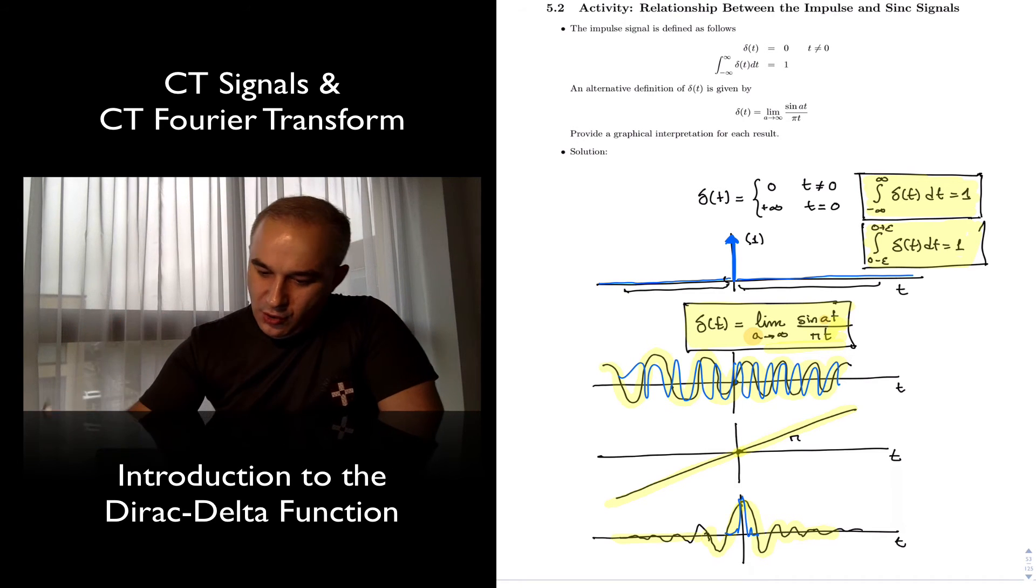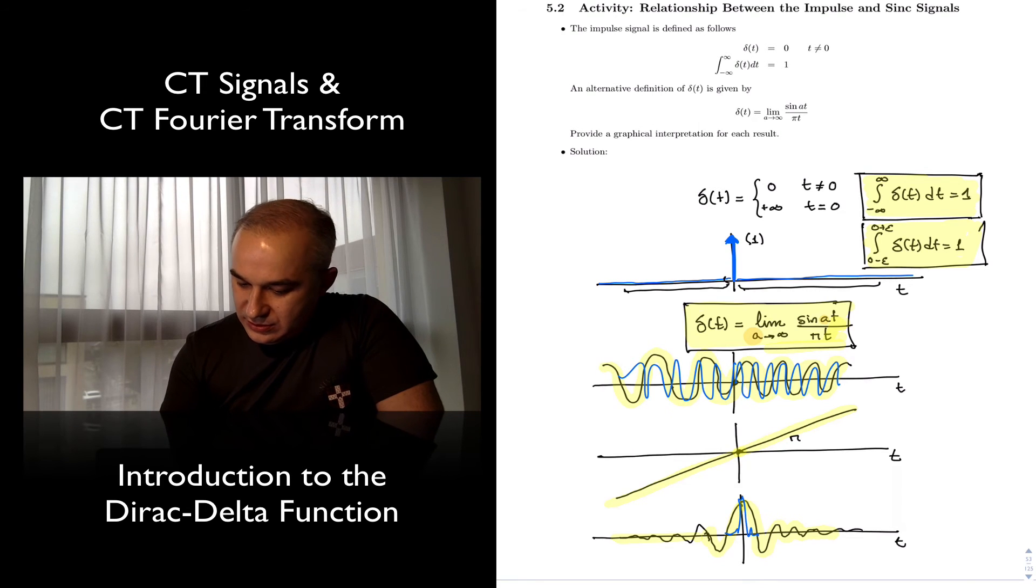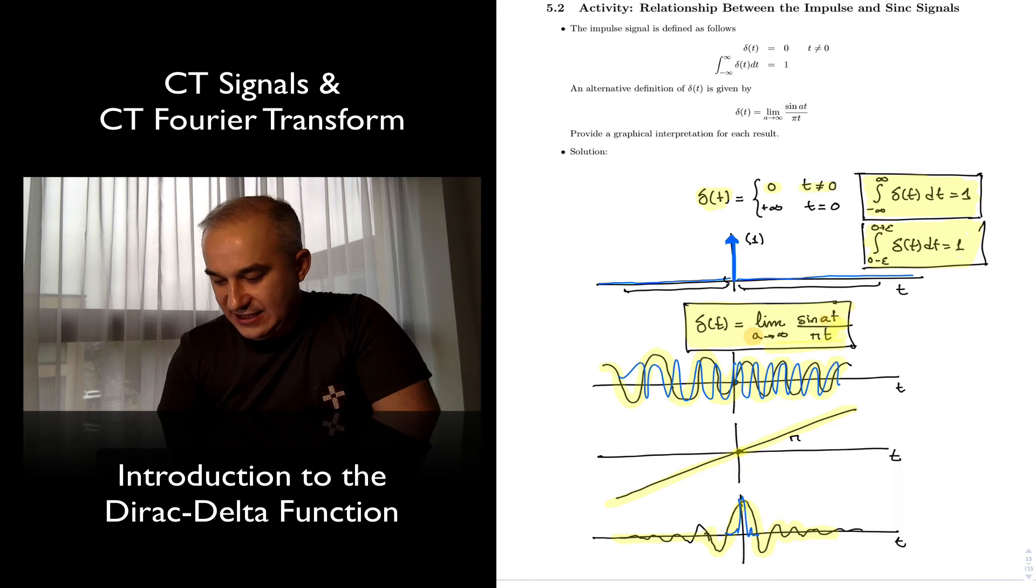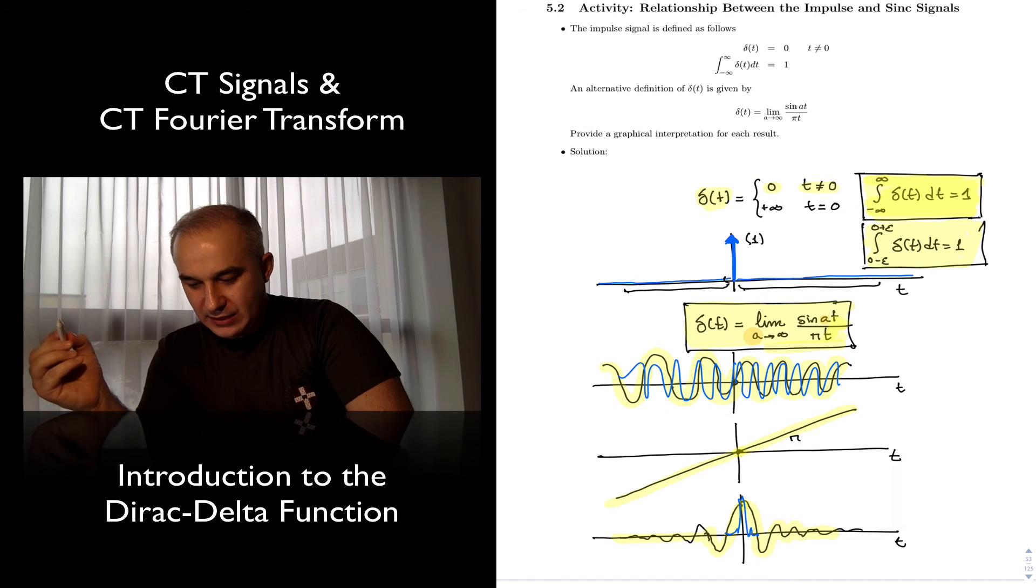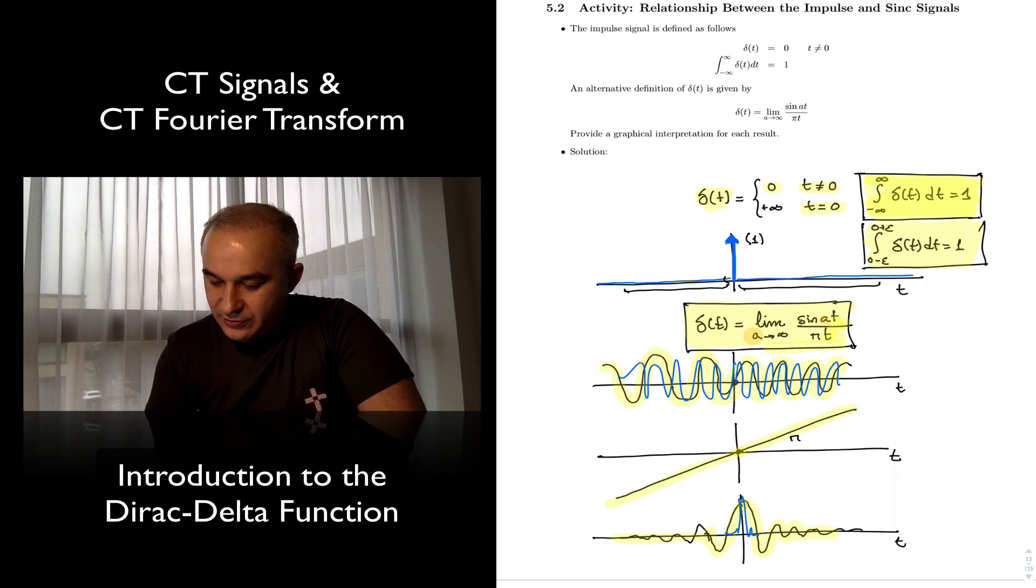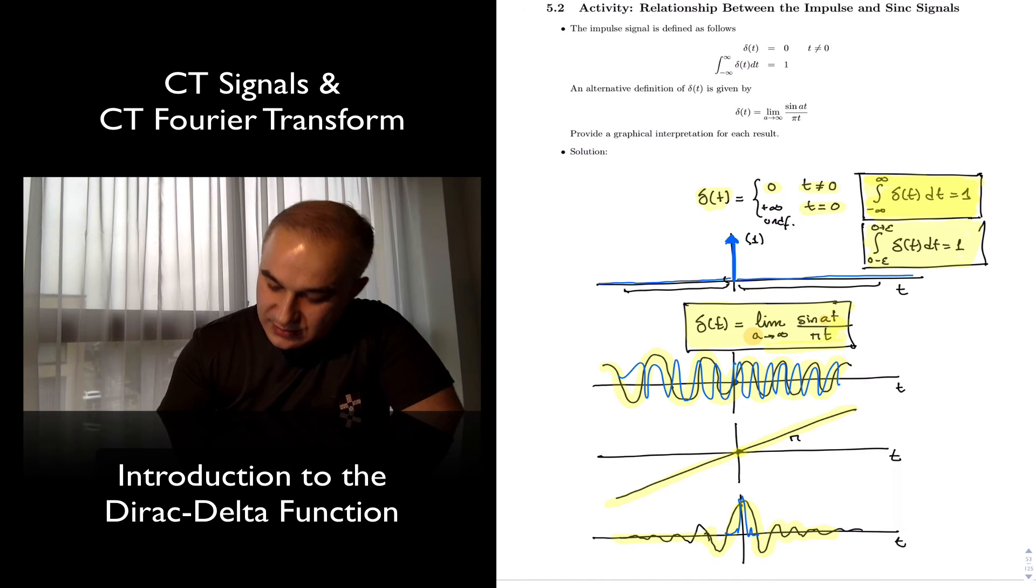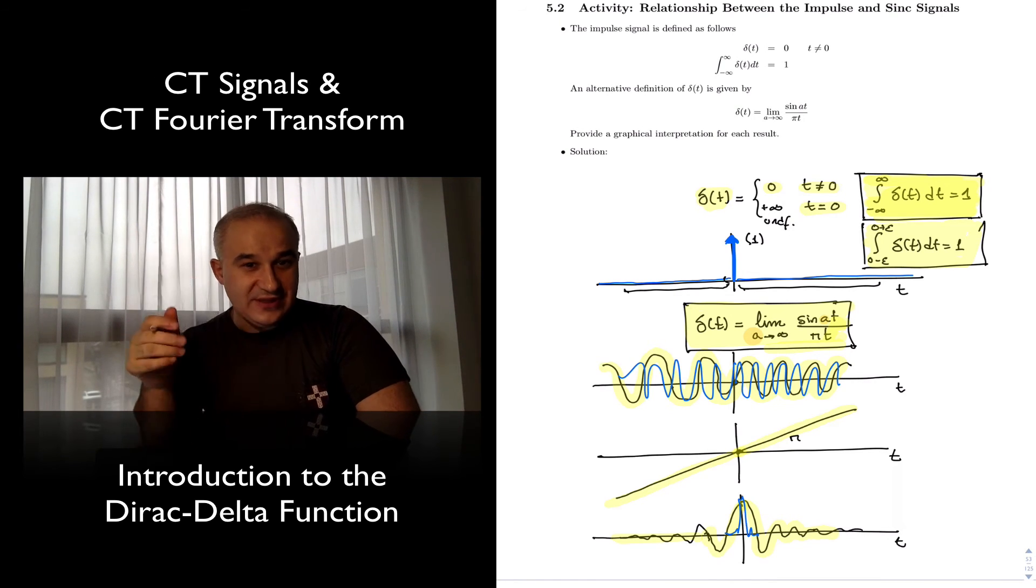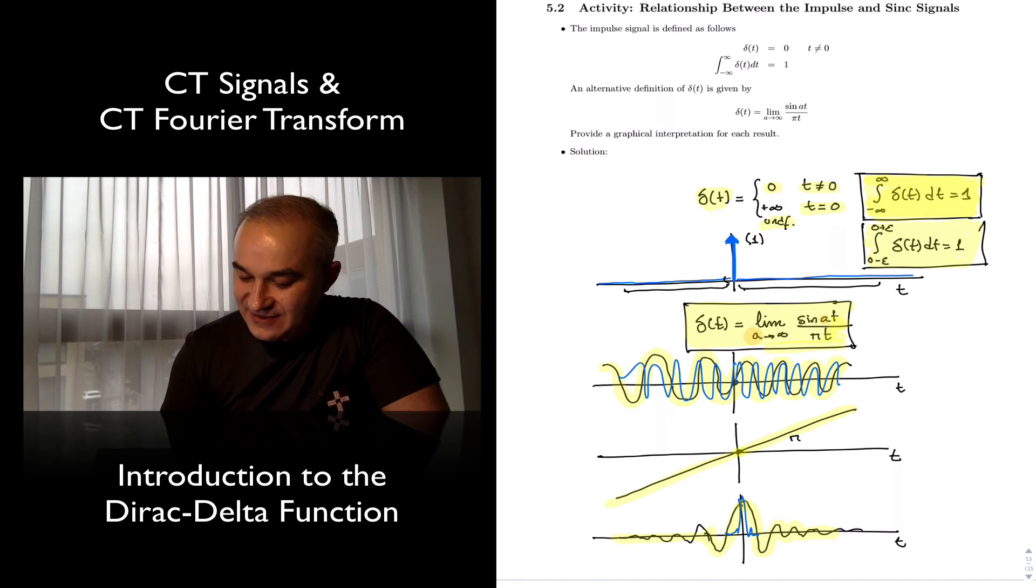Now one more point. Over here, technically you could say you have the delta function is zero everywhere except that t equals zero, and the area under the curve is equal to one, and at t equals zero, technically it is undefined. You can think of something that tends to infinity, positive infinity, but more properly it is that it is undefined.